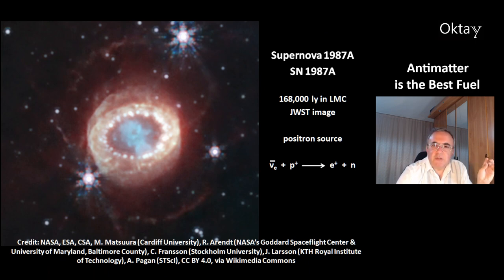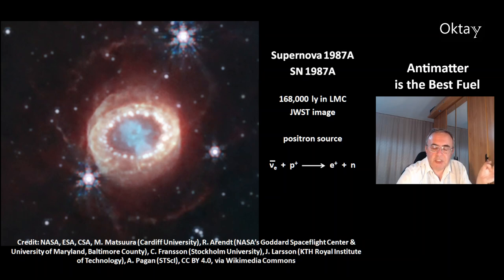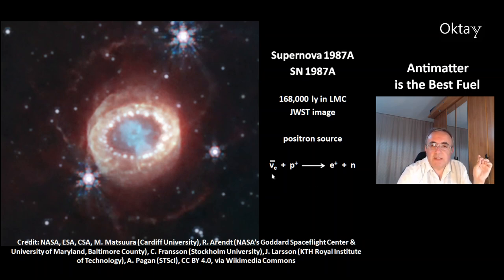This is the supernova 1987A at a distance of 168,000 light-years in the Large Magellanic Cloud. This image is from the James Webb Space Telescope, and this is another source for positrons. The reaction shown is: an electron anti-neutrino and a proton react to produce a positron and a neutron.